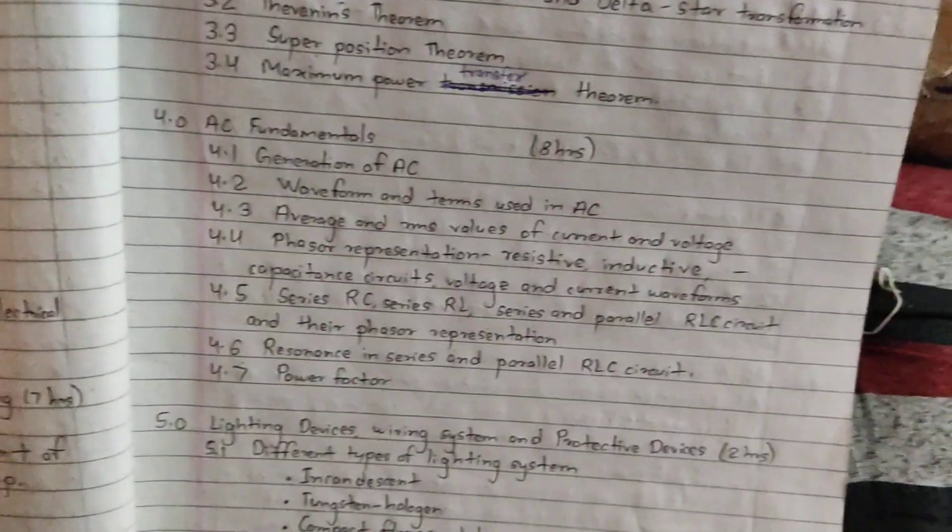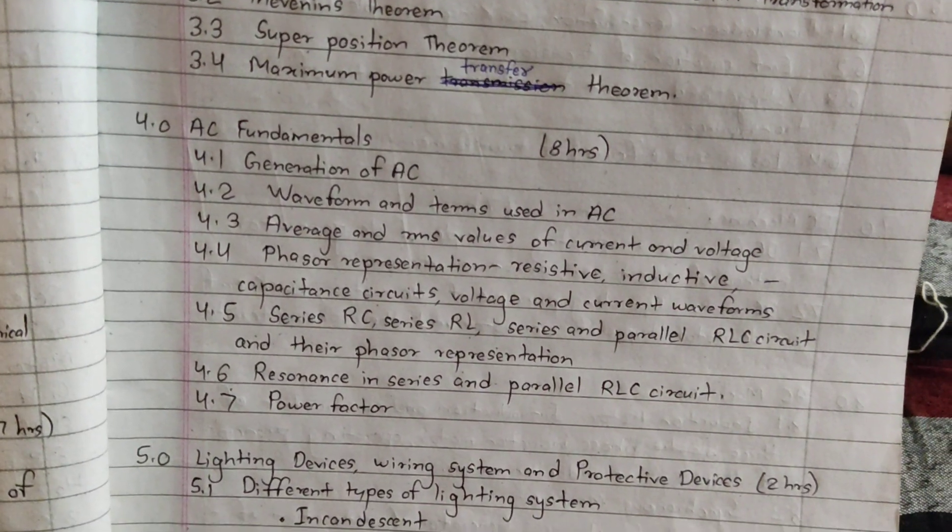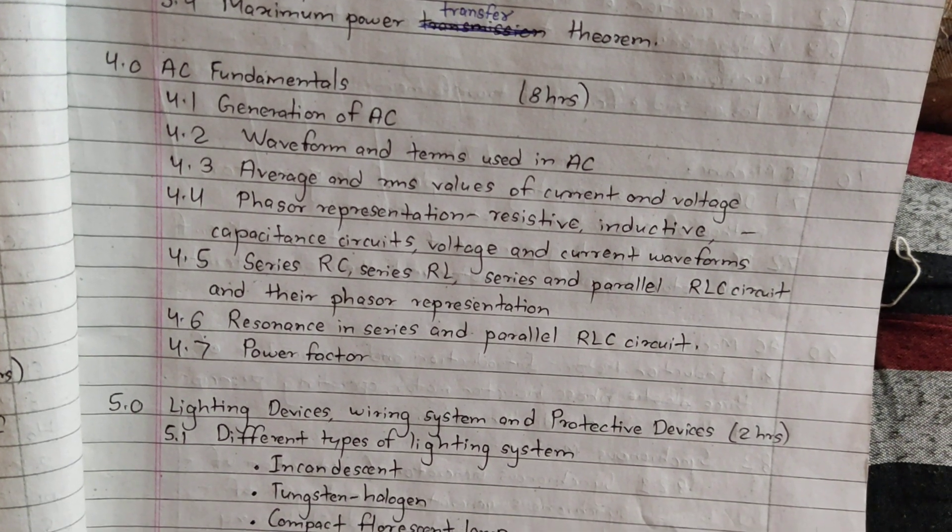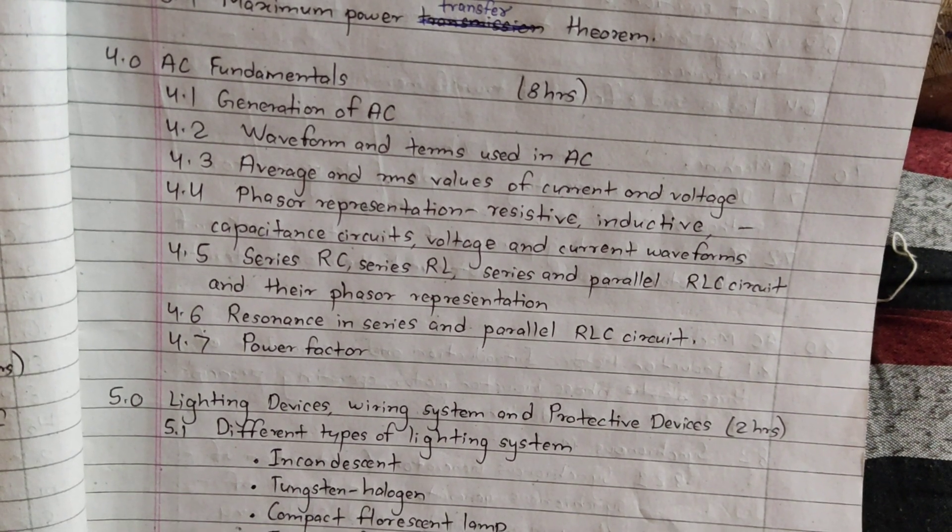This is the chapter 4 major AC fundamentals: generation of AC, waveform and terms used in AC, average and RMS values of current and voltage, phasor representation.